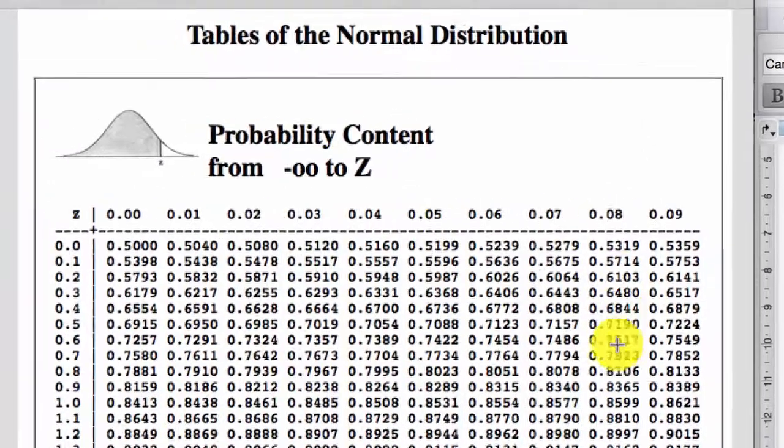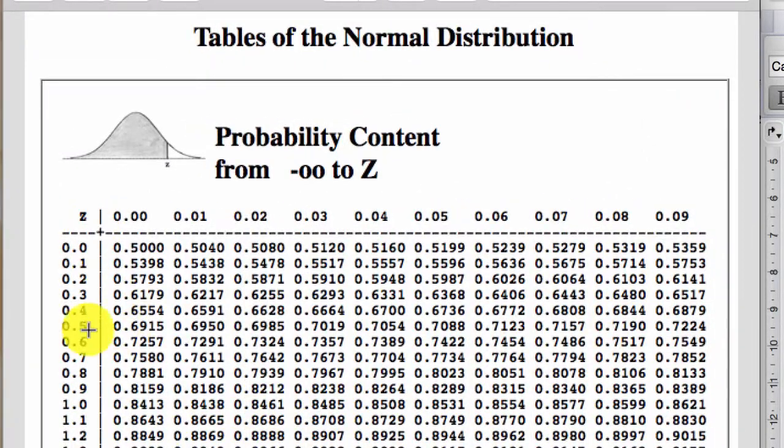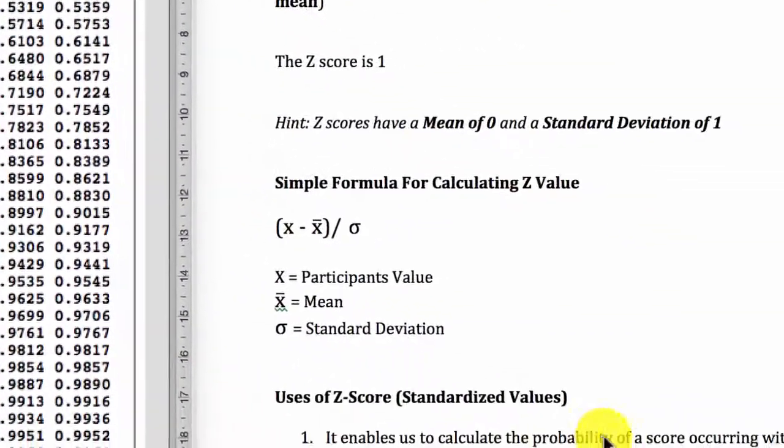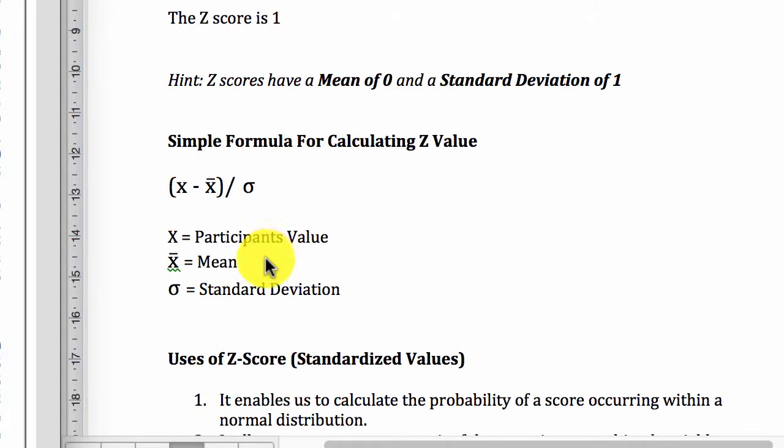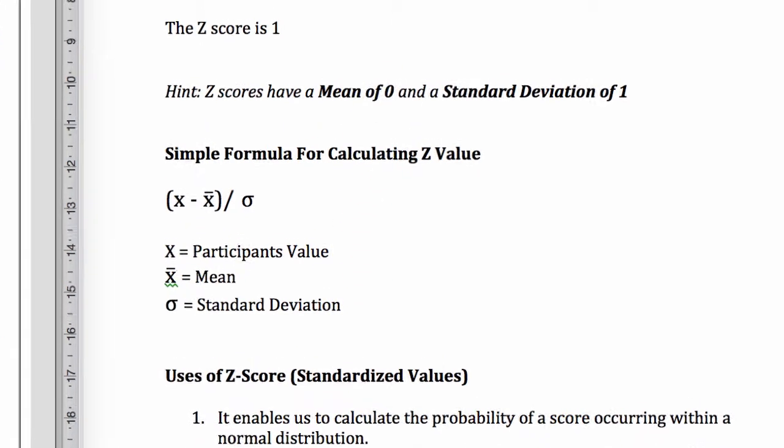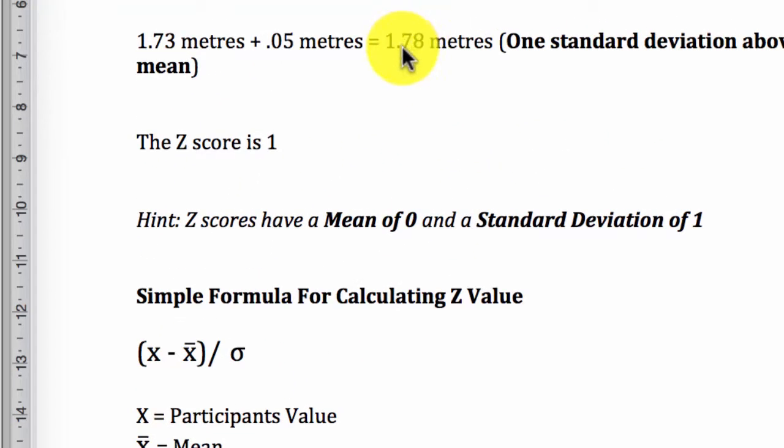Now, if you go to the table of normal distribution, you can see that at the Z score of 1, you would be taller than 84% of the students, which is quite good. So, that's how you use the Z score. You can calculate the probability of a score with a Z score. Without this Z score value, it would be very hard for you to estimate the percentage of students that this particular student is taller than. So, now you know the importance of Z score.